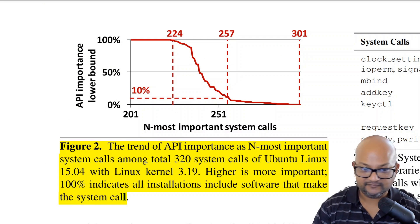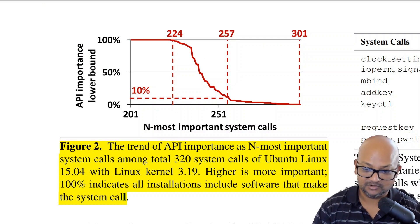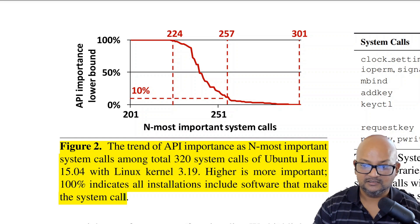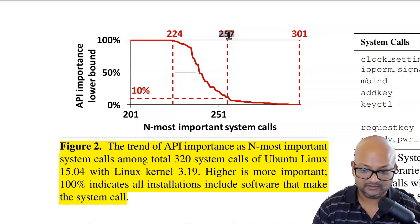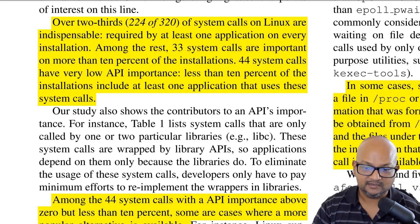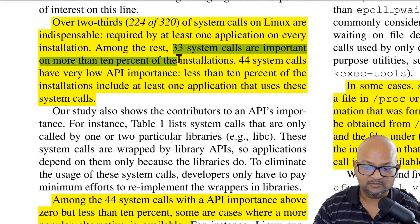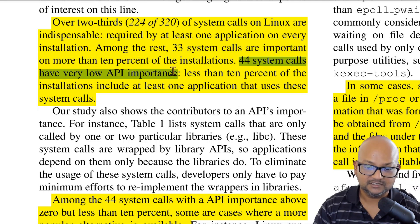What did the authors find? This graph summarizes their findings. As of kernel 3.19, Linux had 320 system calls — currently as of kernel 5, the number is closer to 400. The graph shows that out of those 320 system calls, if you look at the ones whose API importance is more than 10 percent, you will need about 257 of those system calls. To break it down in more detail, over two-thirds of the system calls are very important — they are required by at least one application on every installation.